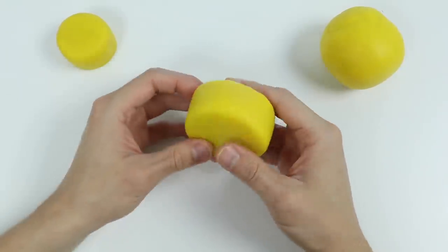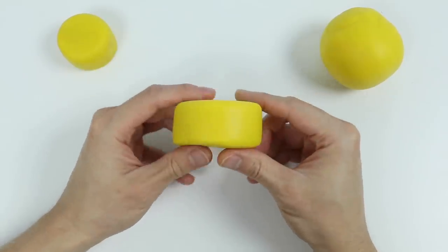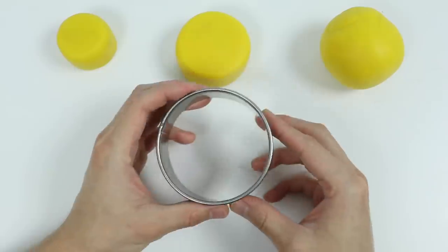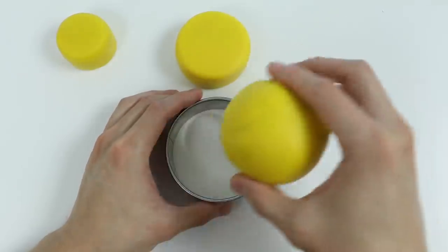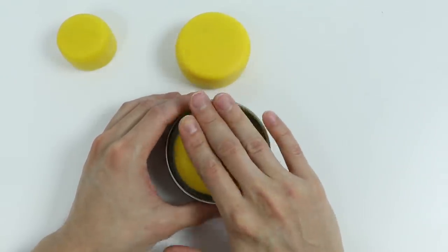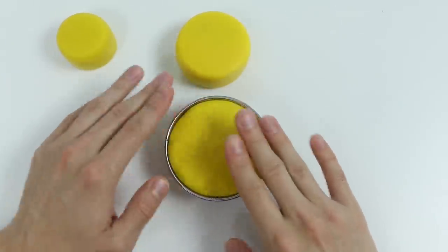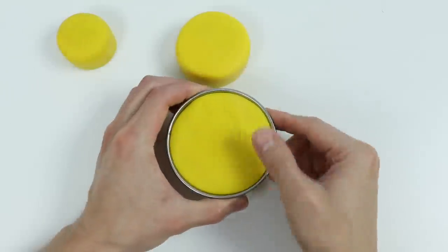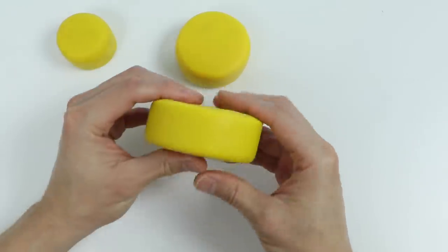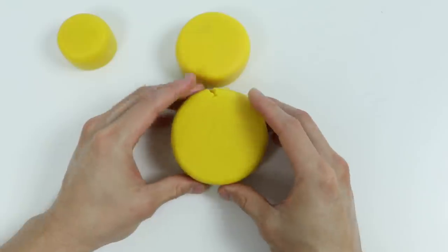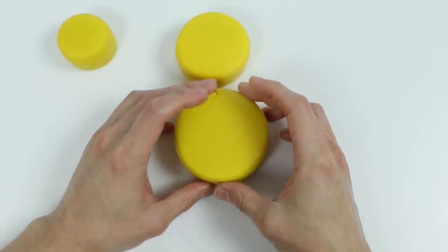All right, here's a closer look at our middle cake layer. Now let's use this cutter to make the largest layer. Awesome, this layer will be the base.